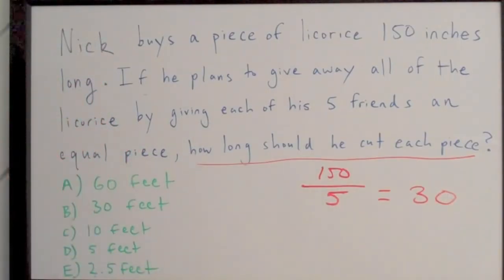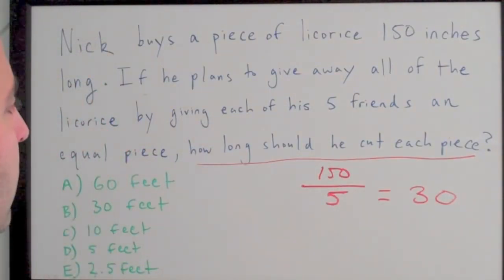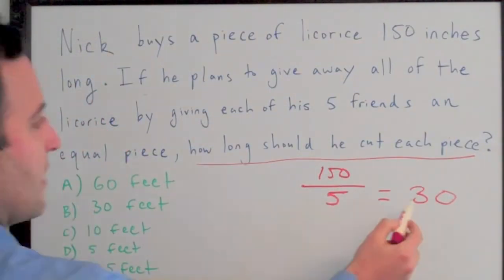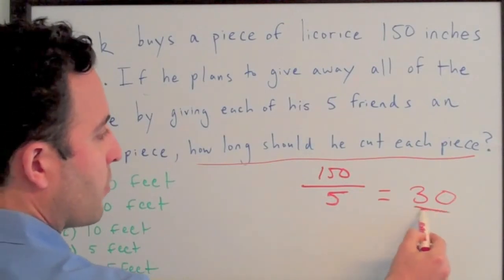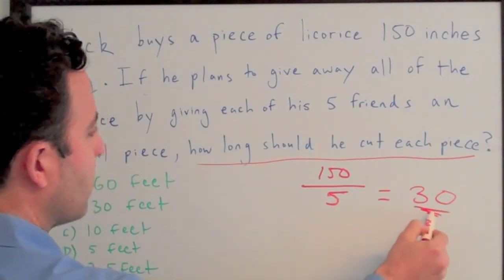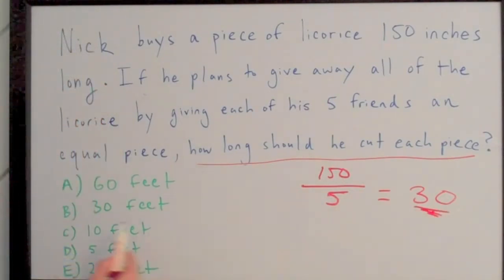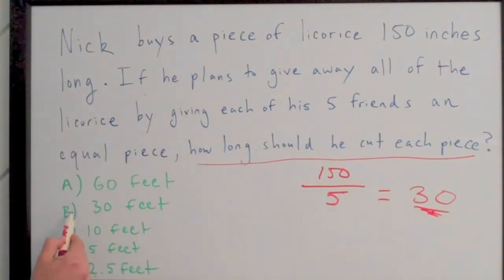Now, this is where students get the problem wrong. They're going to say, oh well, I solved the problem, I got 30. They're going to go to answer choice B and circle it.